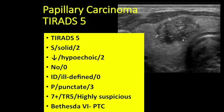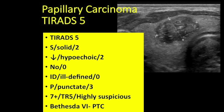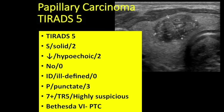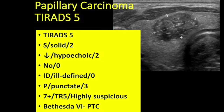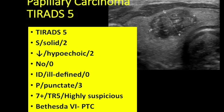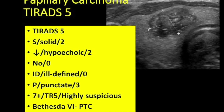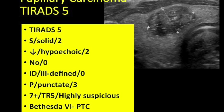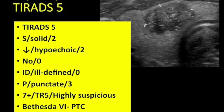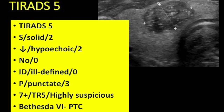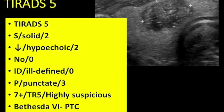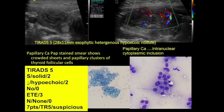Next case: TI-RADS 5 — papillary carcinoma. A well-defined solid hyperechoic nodule. Solid: two. Hyperechoic: two. Not taller than wide. Margins are slightly lobulated. There are definite punctate echogenic foci — three points. Total: seven points, TR5 — highly suspicious. Biopsy confirmed Bethesda 6 PTC and the patient was operated.